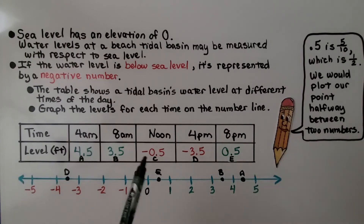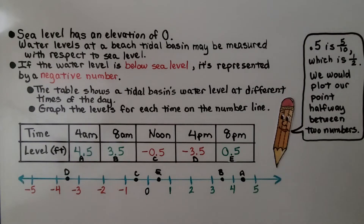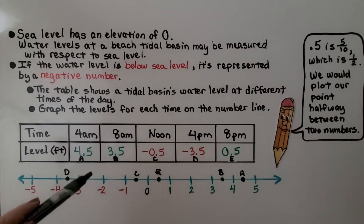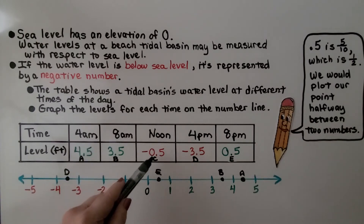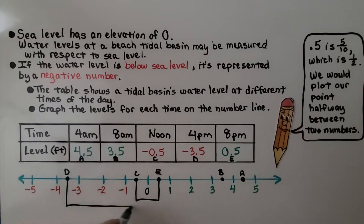We can see that at noon and at 8 p.m., C and E are when the water levels of the beach tidal basin are closest to sea level — closest to zero. We can also see that 3.5 and negative 3.5 are opposites, and negative 5 tenths and positive 5 tenths are opposites. They are the same distance from zero on opposite sides of zero.